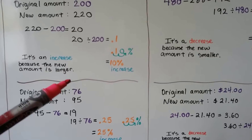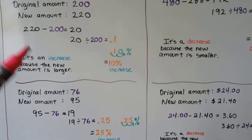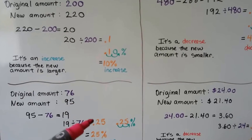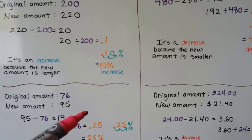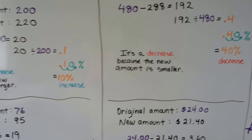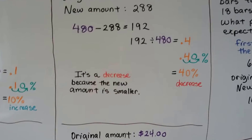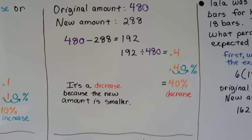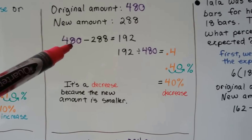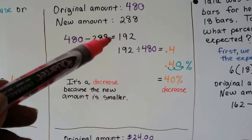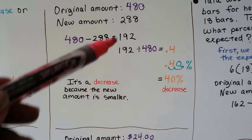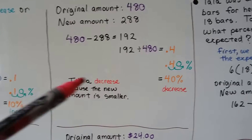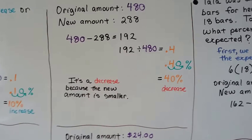In subtraction, the minuend minus the subtrahend equals the difference. So whichever number is bigger, put it first so that you get a nice positive number. It doesn't matter whether it's the original or the new amount — just put the larger number first to subtract and find the difference. The difference here is 192, confirming the 40% decrease.